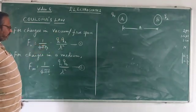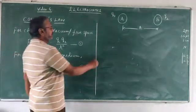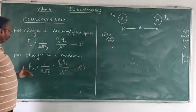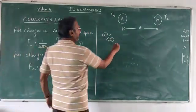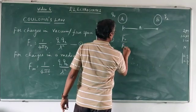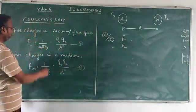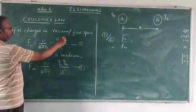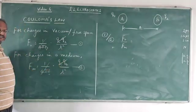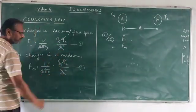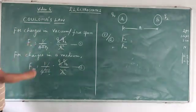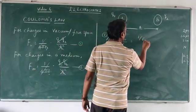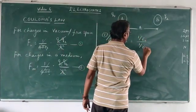Let me call this as equation 1 and call this as equation 2. Let me do 1 divided by 2, that is F0 upon Fm. F0 upon Fm is equal to, if you see very carefully, the constants, Q1, Q2, same charges, the distance of separation between them is same. So I have got here 1 upon epsilon 0, divided by 1 upon epsilon.